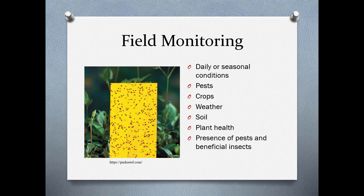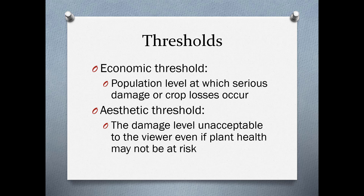Field monitoring or greenhouse monitoring involves looking at daily or seasonal conditions. In a greenhouse situation, unless you're using artificial light, lighting will change over the course of the year. Consider the types of crops you're growing, weather, what type of soil you're using, plant health, and the presence of pests and beneficial insects. Yellow sticky cards are really great for monitoring, and blue sticky cards can be used specifically for thrips. It's really important to confirm you even have a pest before you start using pesticides.